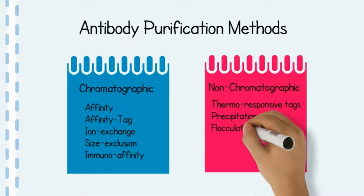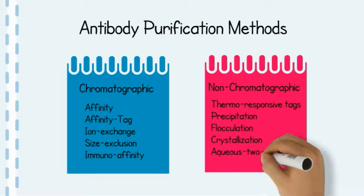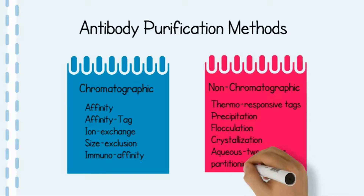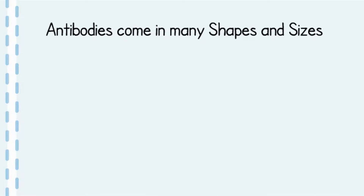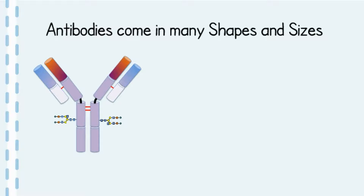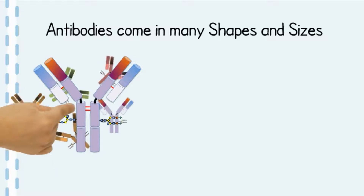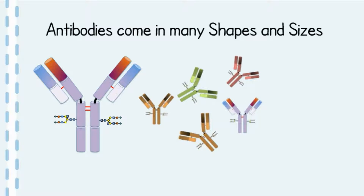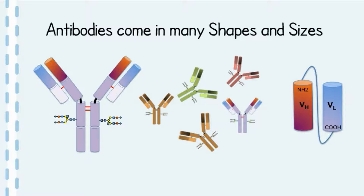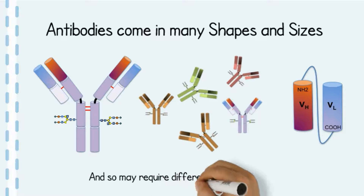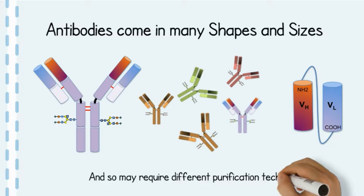Non-chromatographic methods also include precipitation, flocculation, crystallization and aqueous two-phase partitioning. Antibodies used in these areas come in many shapes and sizes, from monoclonals to polyclonals to recombinant antibodies, and so purification methods must be tailored to suit not only the downstream application but also the type of antibody being purified.